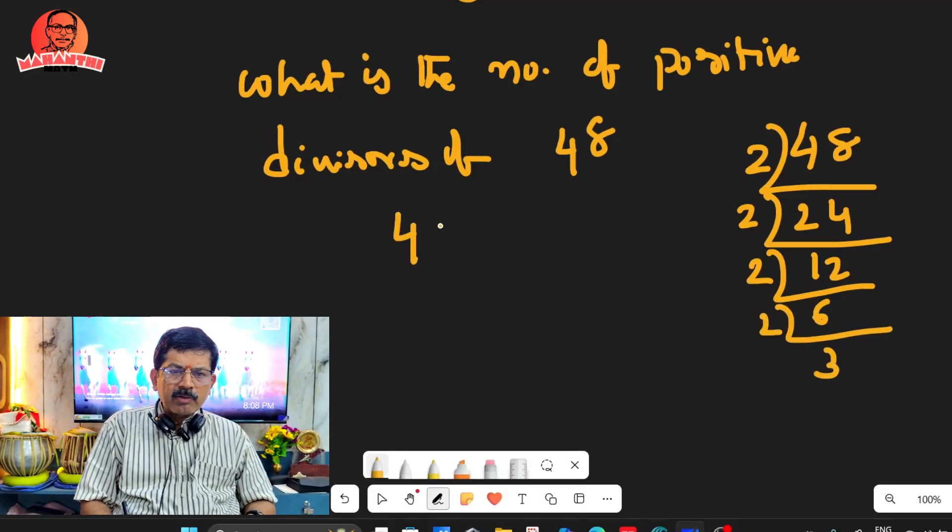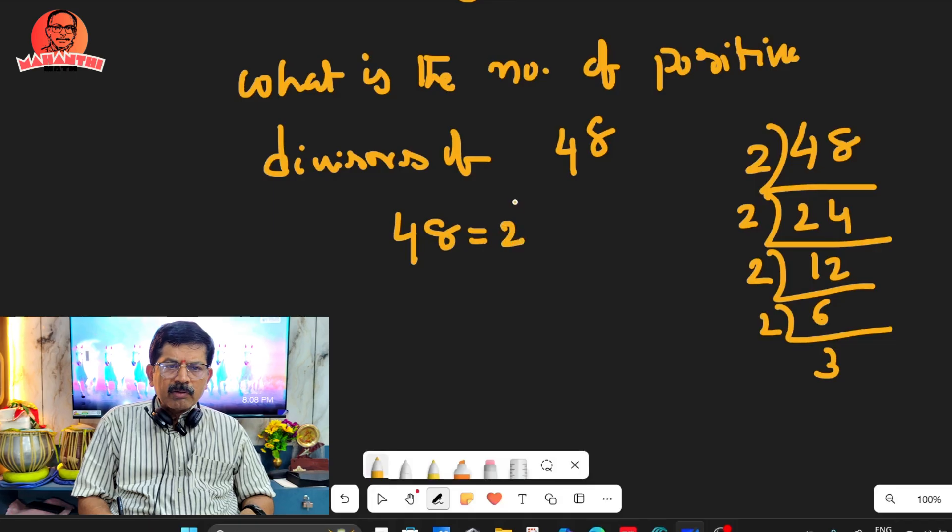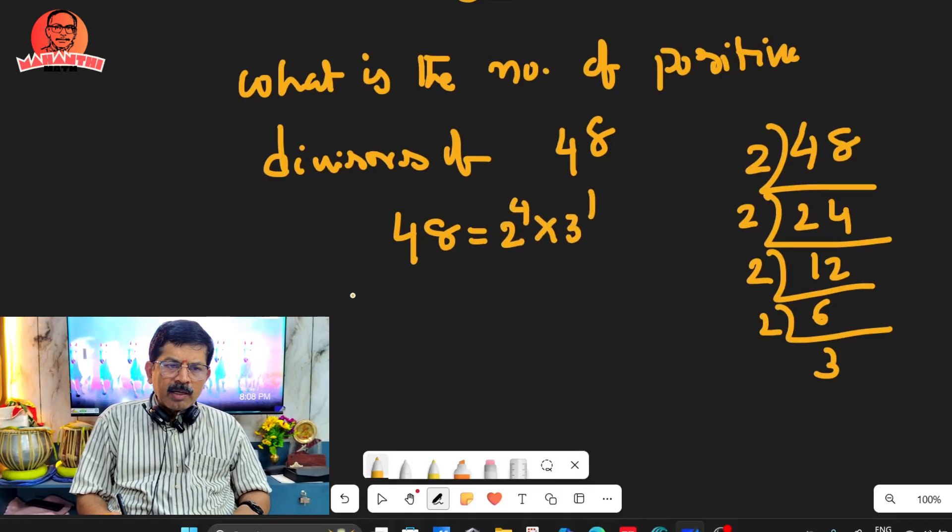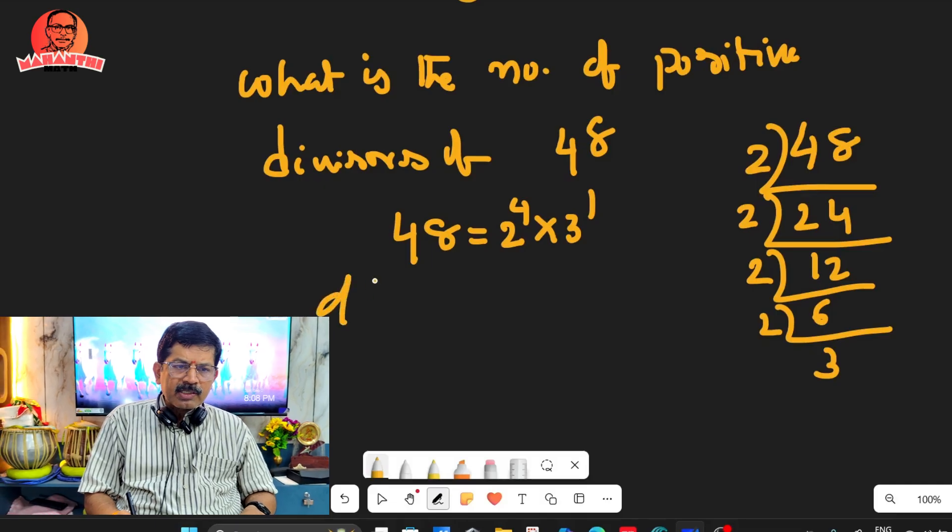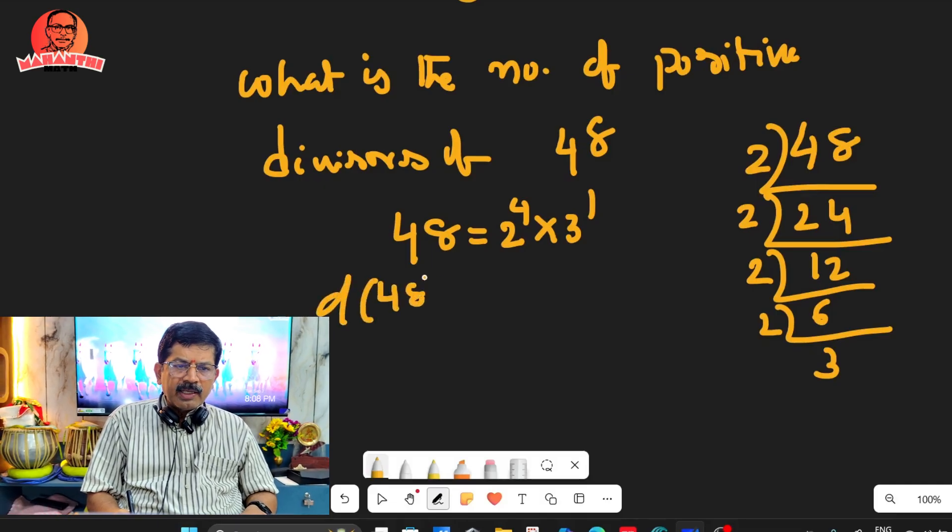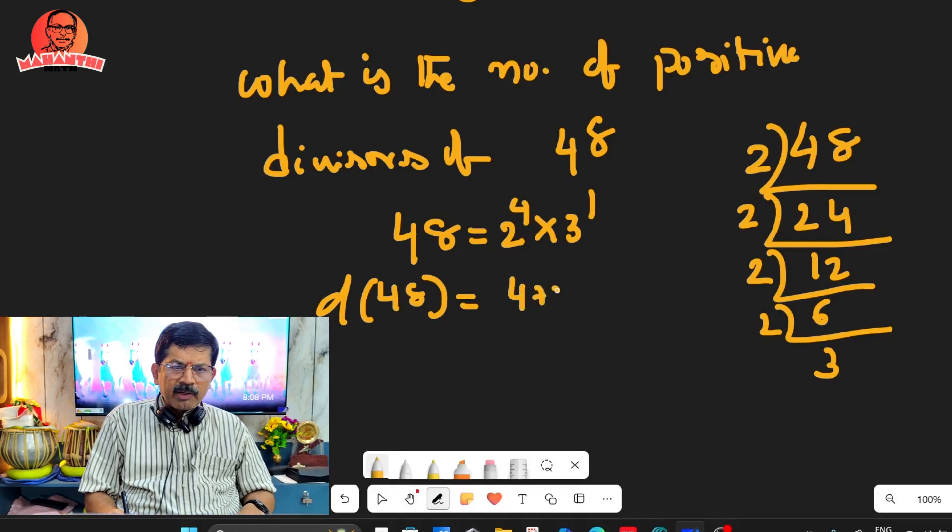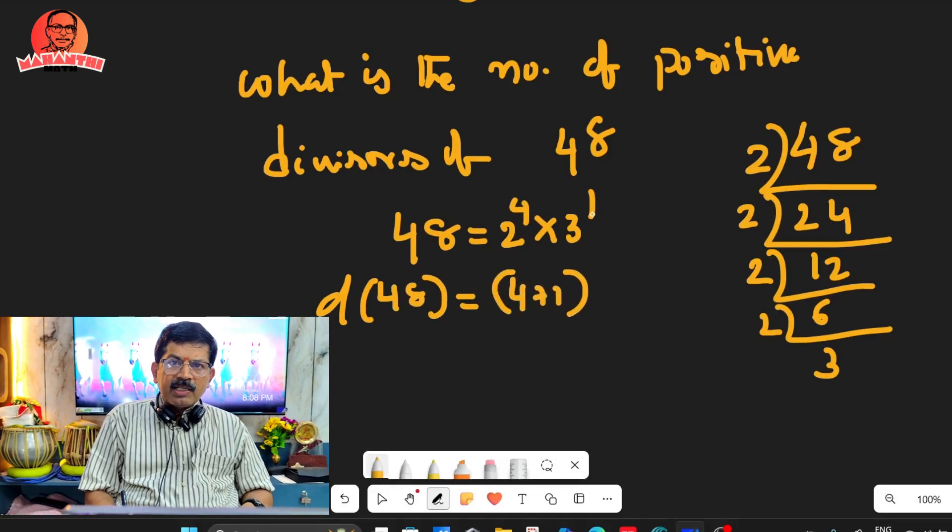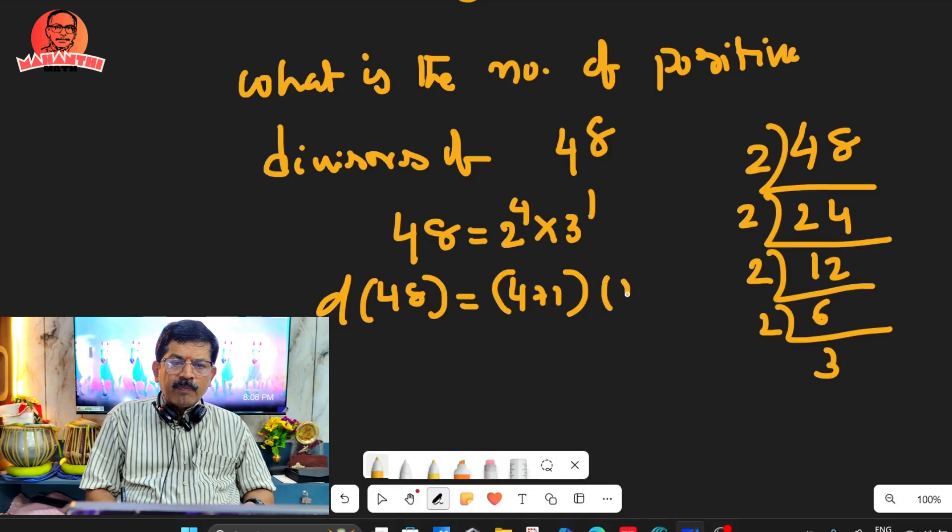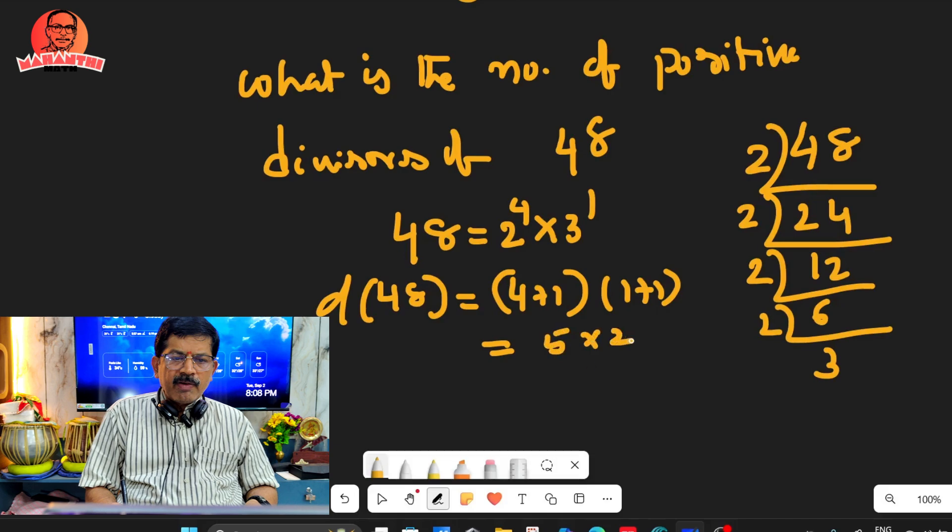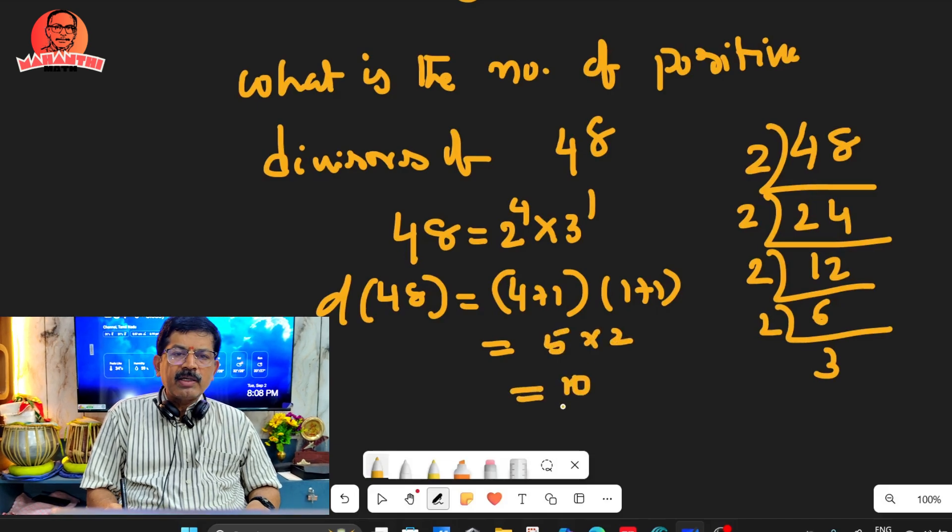So according to our formula, the number of positive divisors of 48 equals - since 2^4 is there, 4 plus 1, times - since 3^1 is there, 1 plus 1. So this is 5 and this is 2. 5 × 2 is 10. 10 will be the answer.